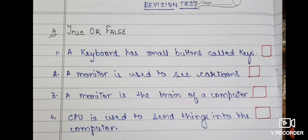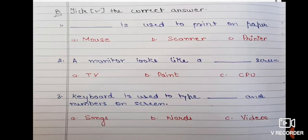Next, Part B, tick the correct answer. Dash is used to print on paper: mouse, scanner, printer. Second is a monitor looks like a dash screen: TV, paint, CPU. Third one is keyboard is used to type dash and numbers on screen.